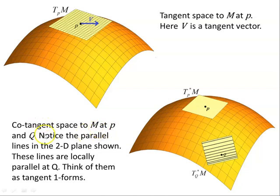So the cotangent space to M at P and Q - notice the parallel lines in a 2D plane. These lines are locally parallel at Q, just like you have with the tangent space there. It's just local to that point for a small region. And think of them as tangent one-forms, these black lines here.